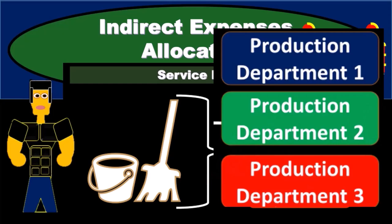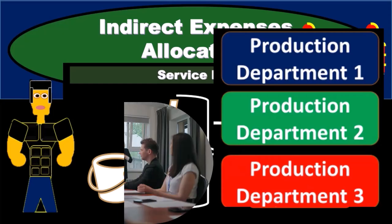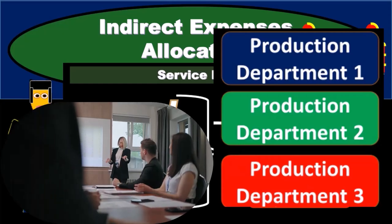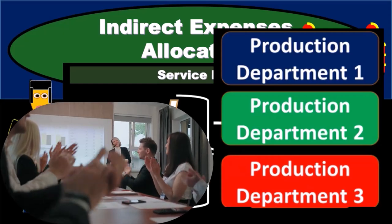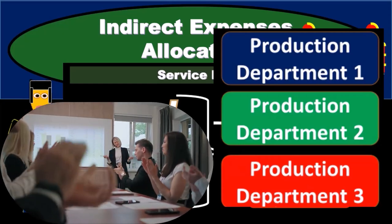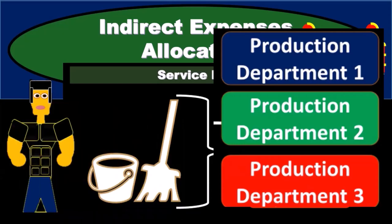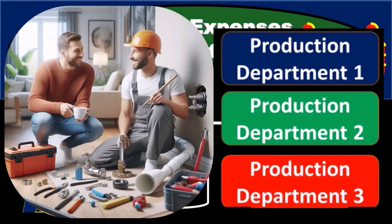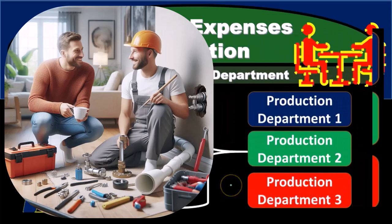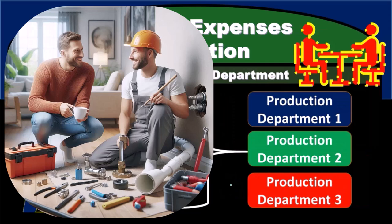It's appropriate for us to allocate on some other basis — we should allocate more to the larger department than the smaller department. Once we do that, we then need to decide: what's going to be a fair way for us to break out this cost — for example, maintenance — to the three departments that are being covered by it? We're going to have to use some type of percentage method.